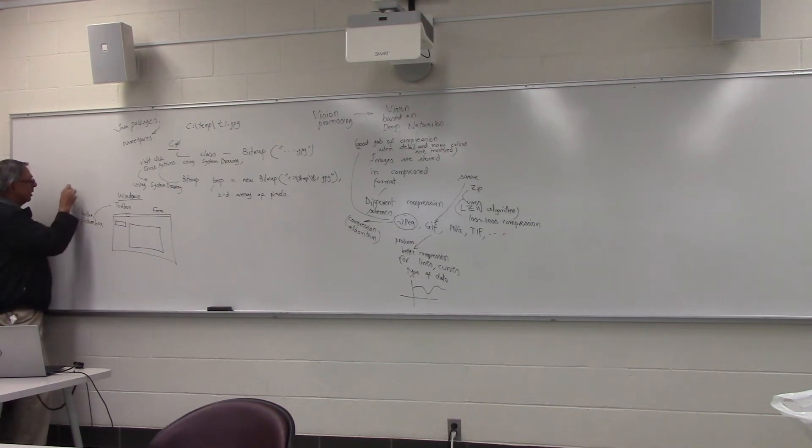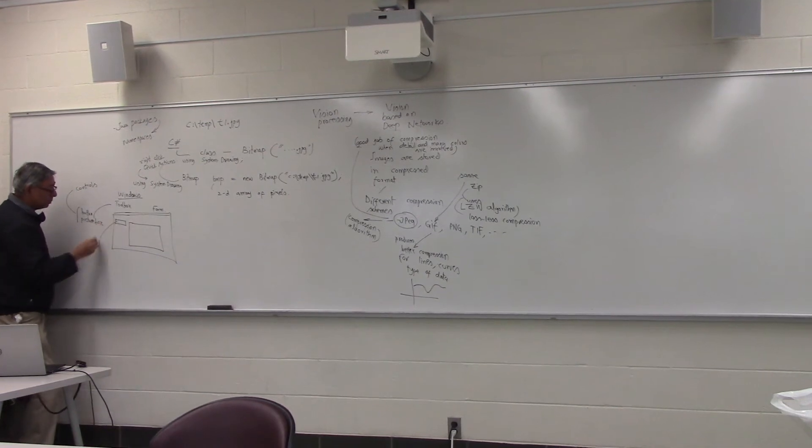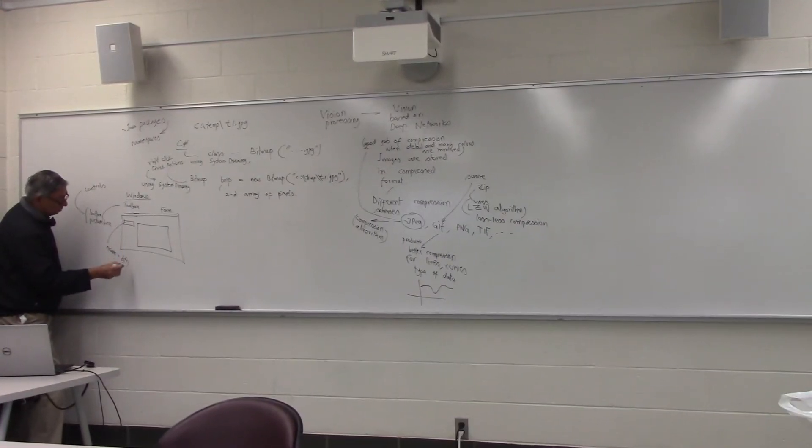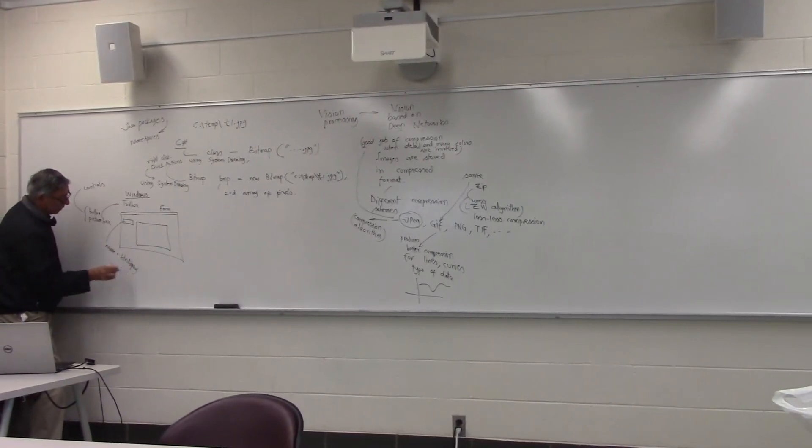These are called controls in general software development. Anytime you put a control on some kind of a display, like a form as an example, you have to give it some kind of a name and some kind of a text property. For the button, for example, you will give it a name, BTN display, as an example.